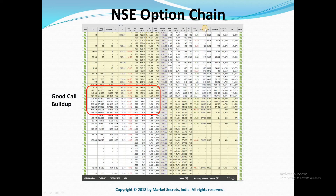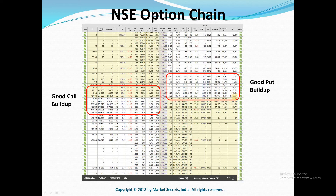The next item is put buildup. You need to look at the put side of the option chain. If you look here, there is a good put buildup as well — for strike prices below 12,200 there is relatively good put buildup happening. This indicates there is going to be a lot of support if Nifty moves down. You need to keep watching this data, but for now 12,200, 12,100, and 12,000 will act as good support.